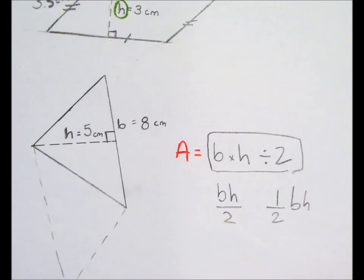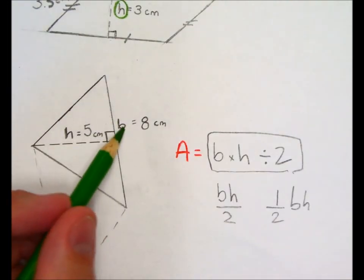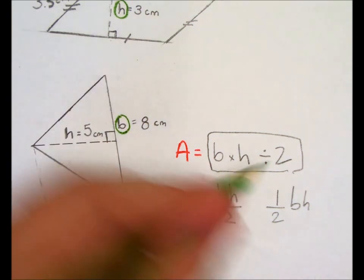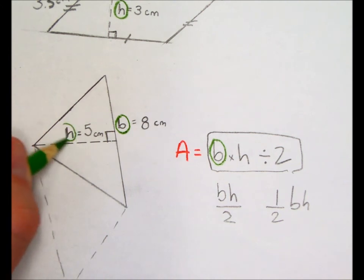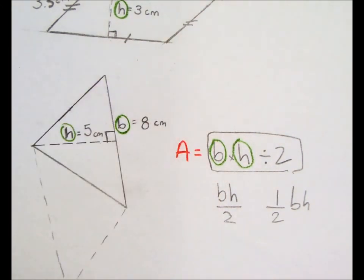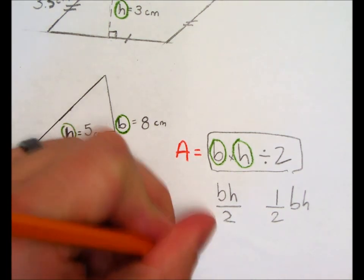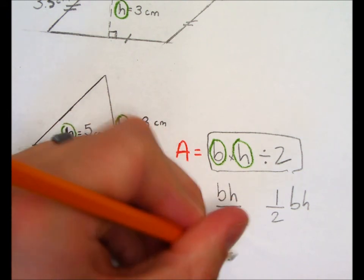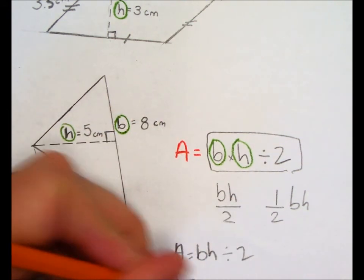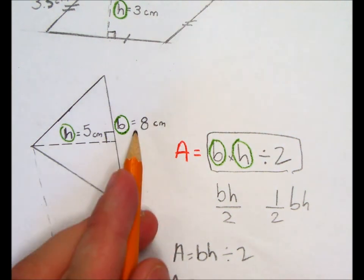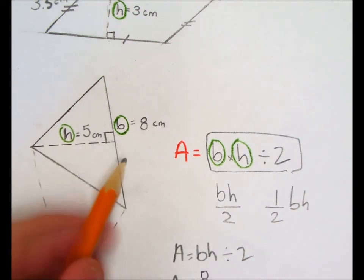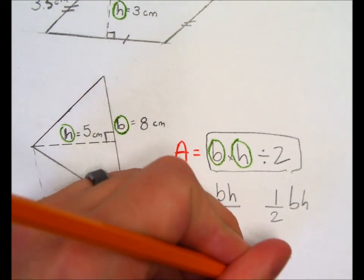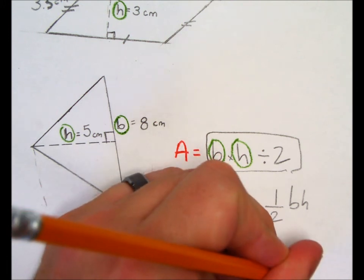So, what information do we know, which I'll indicate in green? Well, we know what our base is. We also know what our height is. And so, all we have to do here is solve our equation. So, area equals base times height divided by 2. So, area equals 8, which is our base, 8 centimeters, times our height, which is 5 centimeters. And that's all divided by 2.